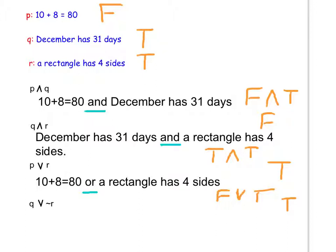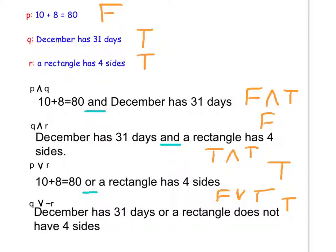Pause the video and write the last compound statement. Remember, the squiggle in front of R means NOT. So this is Q OR NOT R. The compound statement is: December has 31 days, OR a rectangle does NOT have 4 sides. December has 31 days is true; a rectangle does NOT have 4 sides is false. With OR, only one needs to be true, so the final compound statement is true. Thank you.